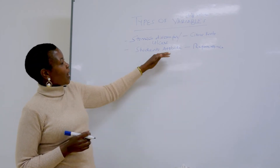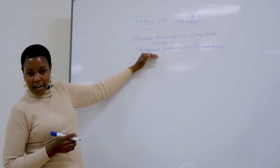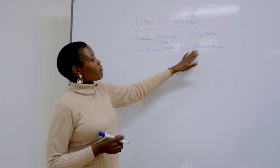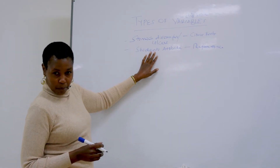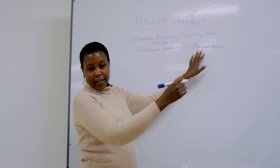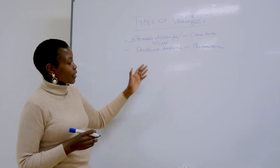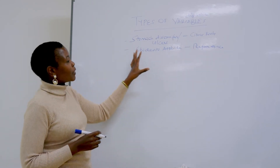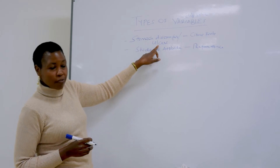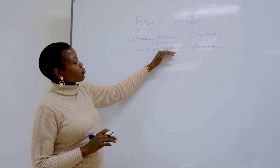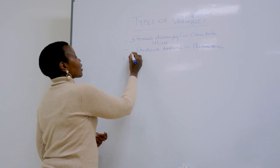Let's look at the second example: attitude and academic performance of students. When a student has a positive attitude towards learning, their performance is likely to be good, holding other factors constant. So it means a positive attitude may bring a good academic performance, and vice versa, holding all other factors constant. These two examples are telling us that one determines the change in the other. The fruit brings a change to the pain we feel, and attitude brings a change in academic performance.